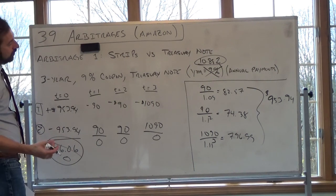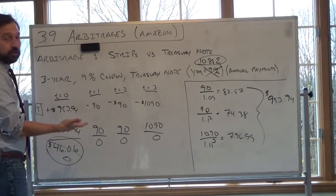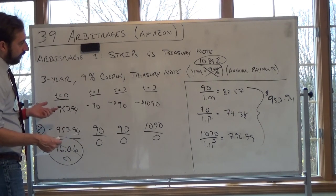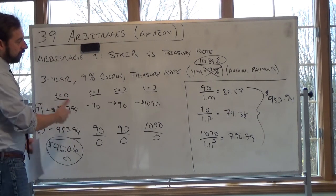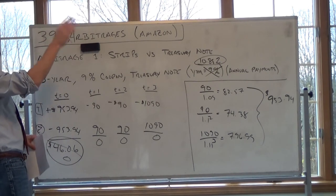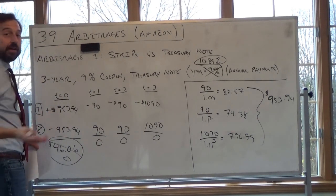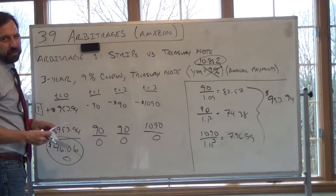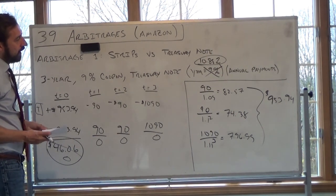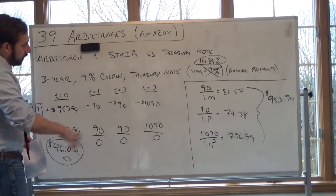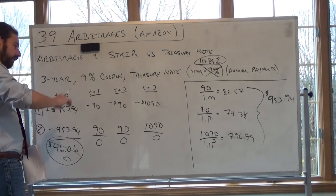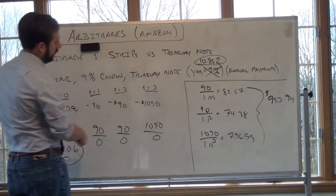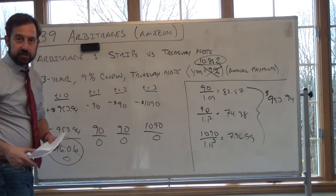Now, what also could adjust is the term structure could adjust. So, in other words, you could probably figure it out pretty easily, but what would the term, what we had was 9%, 10%, 11%. How would that have to change such that there is no arbitrage? You could probably figure that out, but think about it. You could figure it out pretty quickly. So the zero coupon bond rates could change, the term structure could change, or simply the bond price could change such that there is no arbitrage.